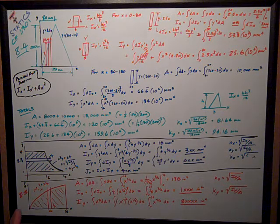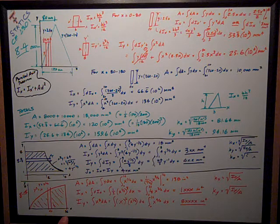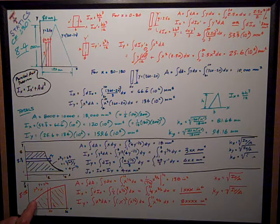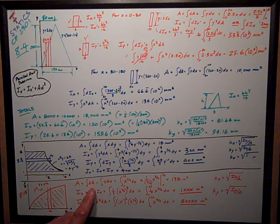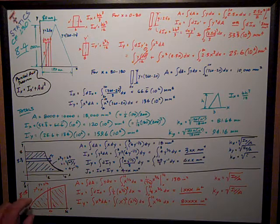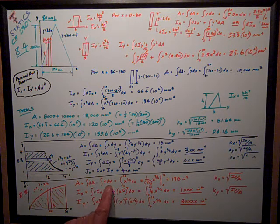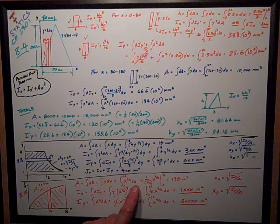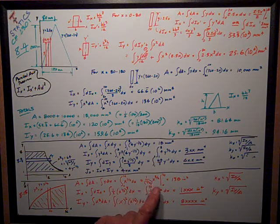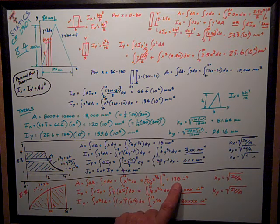Last but not least, problem 8-15 is a curve bounded by x = 36 on the right side, where at that point y = 6. The formula for the curve is y² = x, or y = x^(1/2). The area equals the integral of dA, where my strip is dx wide by y tall, so it's y dx. Substituting x^(1/2) for y, evaluated from 0 to 36, I get 144 in².